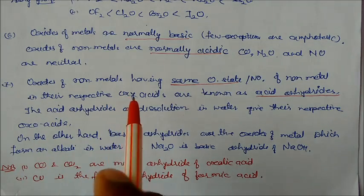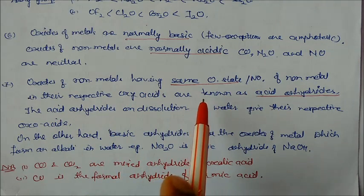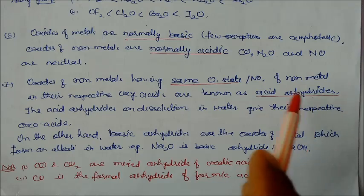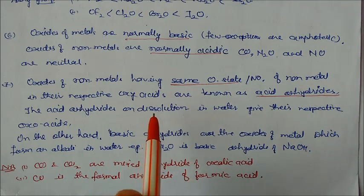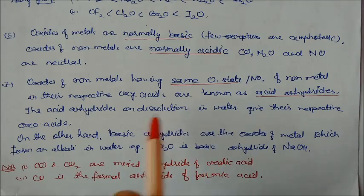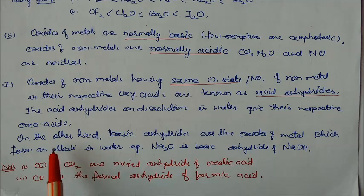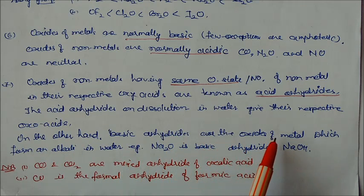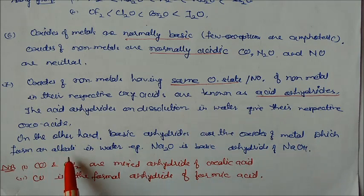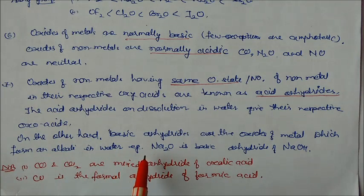Oxides of non-metals having same oxidation state or number of non-metals in their respective oxyacids are known as acid anhydrides. The acid anhydrides, on dissolution in water, give their respective oxoacids. So if you dissolve in water, they will give you respective oxoacids. We will see examples. On the other hand, basic anhydrides are the oxides of metal which form an alkali. So basic anhydrides, they are forming alkali. They are forming acids. For example, Na2O is basic anhydride of sodium hydroxide.